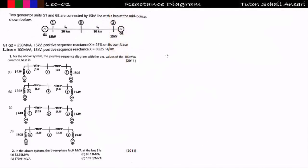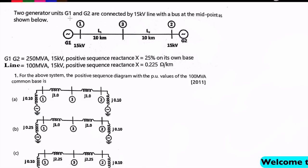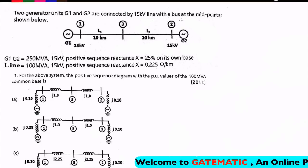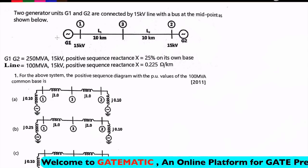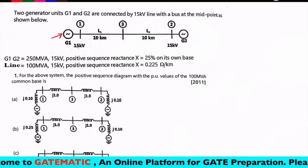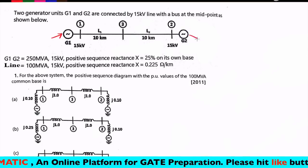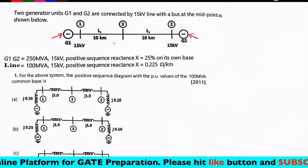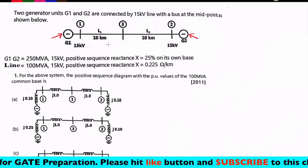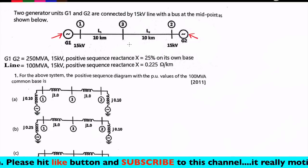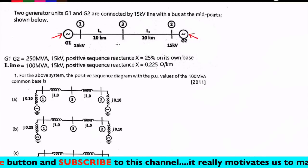Let's start by solving this question. This question has been asked in GATE 2011 for two marks and two marks, that is four marks total. The question says: two generator units G1 and G2 are connected by a 15 kV line with a bus at the midpoint. Generator G1 is working at 15 kV and G2 is also working at 15 kV.